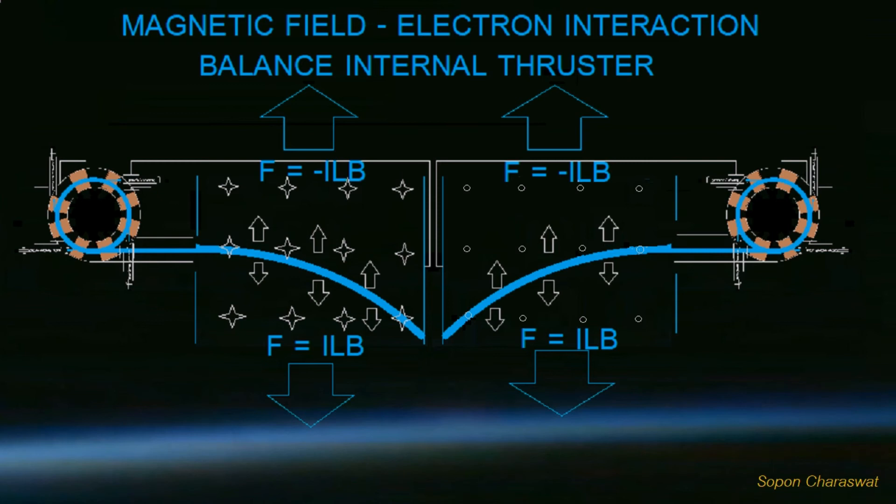In accordance with Fleming's right-hand rules, the force generated by the electric field of the propulsion units will both cancel out.